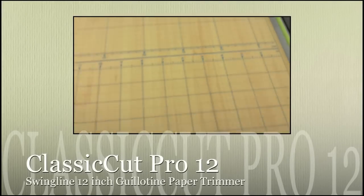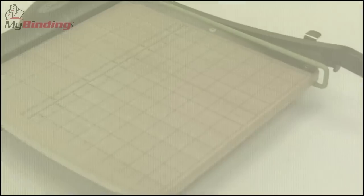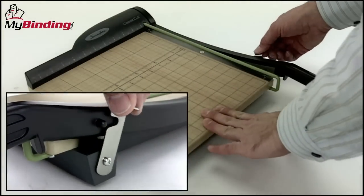Welcome to MyBinding video. Today we're looking at the Classic Cut Pro 12, a 12-inch guillotine style trimmer by Swingline. Stainless steel blade and a solid wood top, this is a great machine.